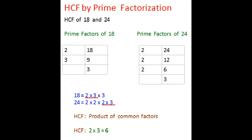6 3's are 18 and 6 4's are 24. This is how 6 is the common factor and in this case it is the highest common factor.